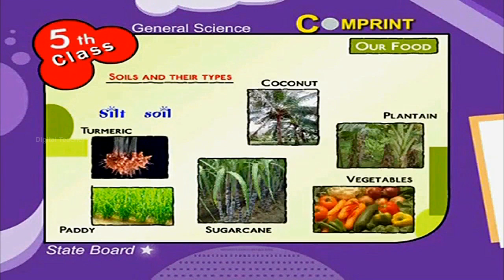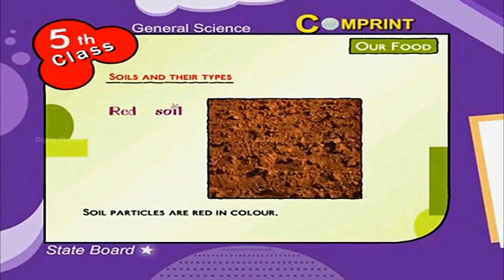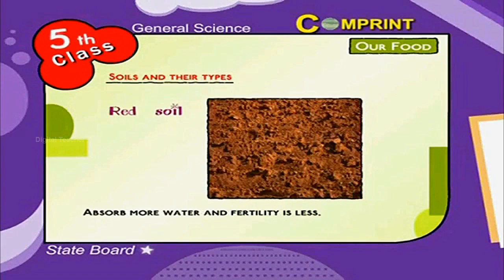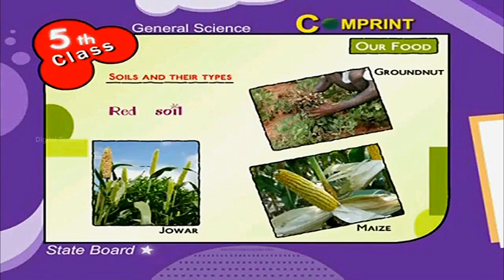Red Soil has soil particles that are red in colour. It absorbs more water but fertility is less. Found in Telangana and Anantapur districts. Crops like Jowar, Maize, and Groundnut are grown here.